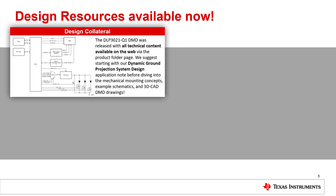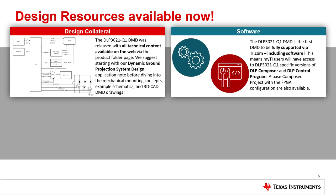In order to help accelerate evaluation and system design for dynamic ground projection, we've put a lot of design resources on TI.com via the DLP 3021-Q1 product folder. All of our DLP 3021-Q1 design content has been made available on TI.com for myTI users. We have application notes covering brightness requirements and system design, as well as design materials such as an example schematic and mechanical support documents, including mounting concepts and 3D DMD drawings. We've also pushed to make the DLP 3021-Q1 the first DMD to have all supporting software available for myTI users.